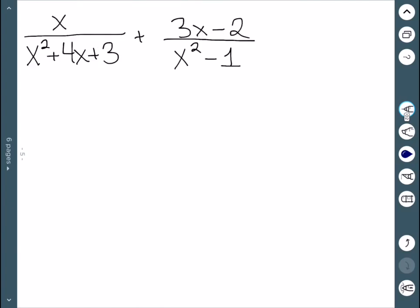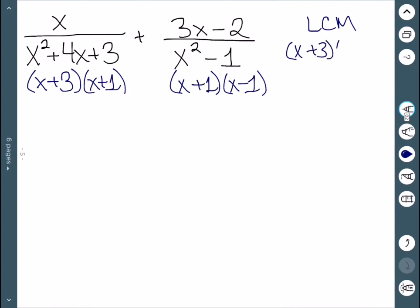We'll now look at adding two fractions. We start by factoring the denominators. x squared plus 4x plus 3 factors into (x plus 3)(x plus 1). And x squared minus 1 factors into (x plus 1)(x minus 1). So the LCM is (x plus 3)(x plus 1)(x minus 1).